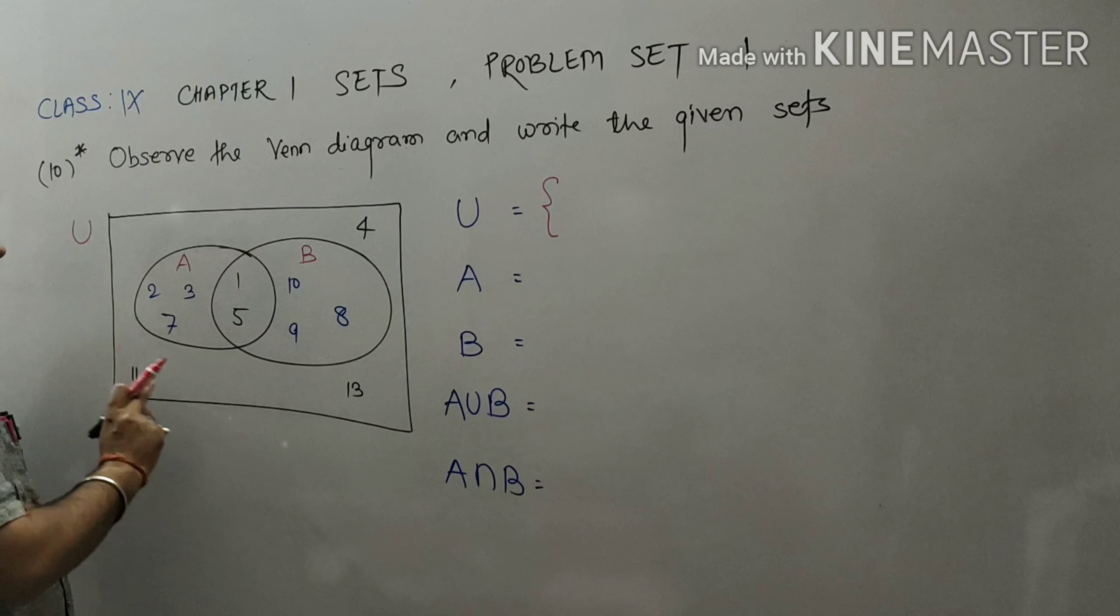For set B, this whole part is set B. So in set B you will get 1, 5, 8, 9, and 10.